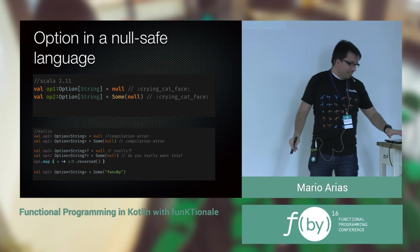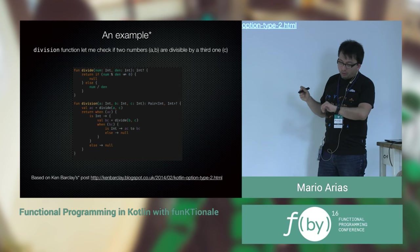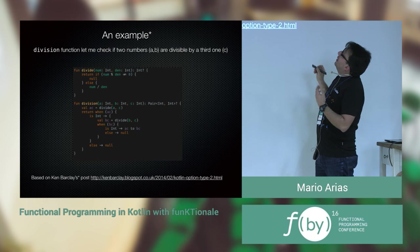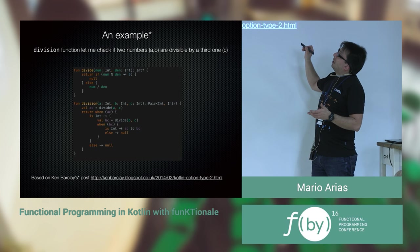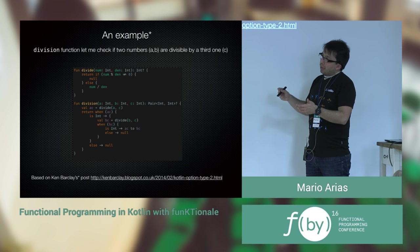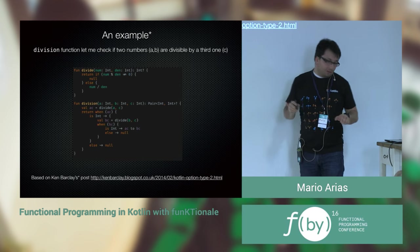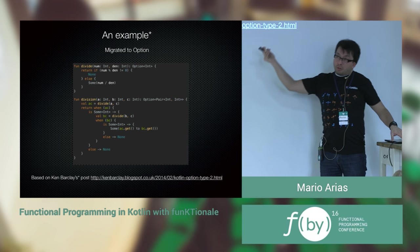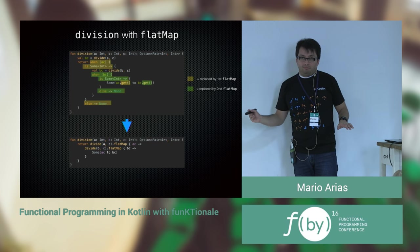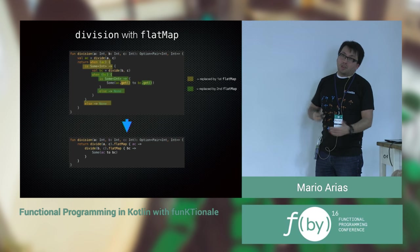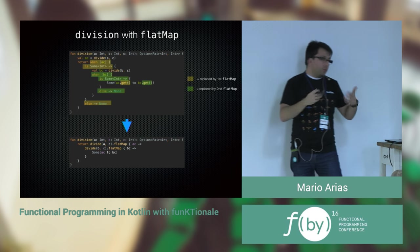Here's a concrete example — a `division` function that checks whether two numbers A and B are divisible by a third number C. I could create this function using nullable types — it looks okay. Or I could change it to use Option — it doesn't look much better actually. Or, you could transform it into flat maps — and it looks a lot nicer. So Option is still useful in a null-safe language; it gives you more features than just null safety.